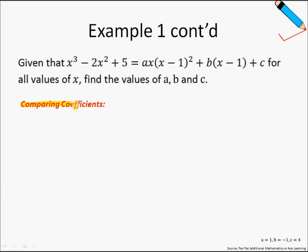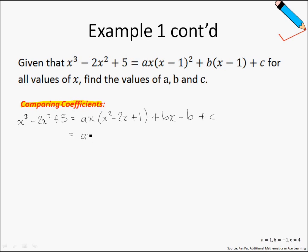Comparing coefficients — same example. What I'm going to do now is expand the right-hand side expression. So x cubed minus 2x squared plus 5 equals ax times (x minus 1) squared, expanding (x minus 1) squared as x squared minus 2x plus 1, plus bx minus b plus c. Expanding further: ax cubed minus 2ax squared plus ax plus bx minus b plus c. Grouping terms with similar powers of x, the x-term gives (a plus b)x.